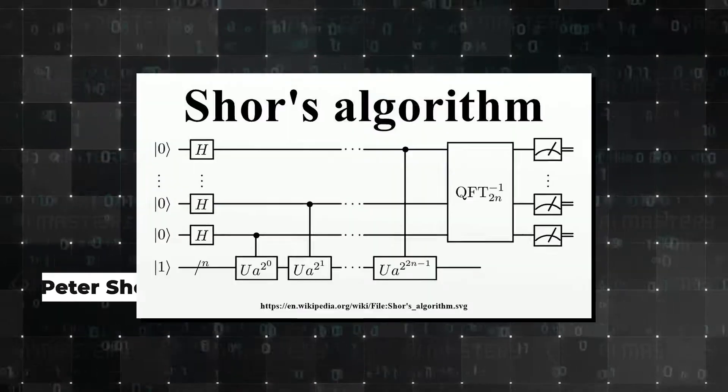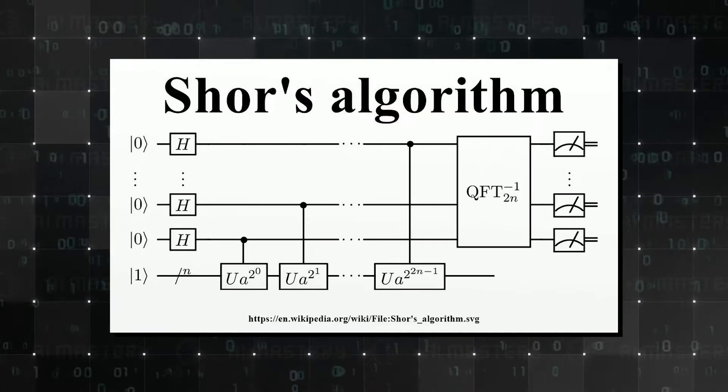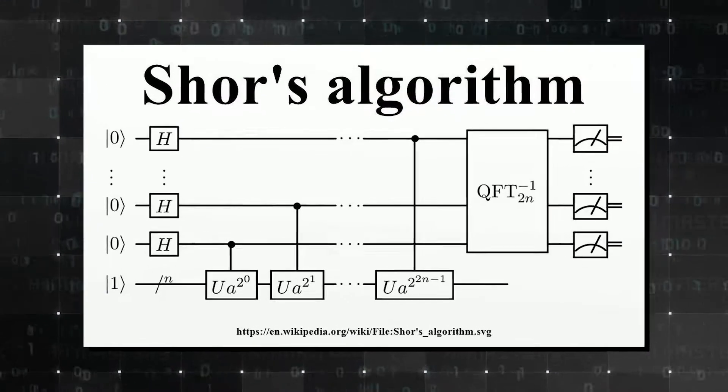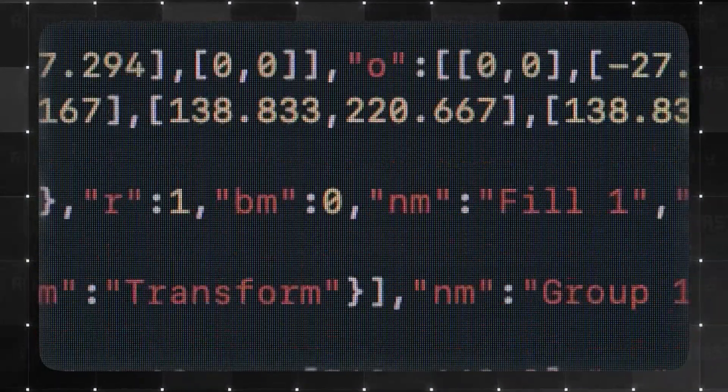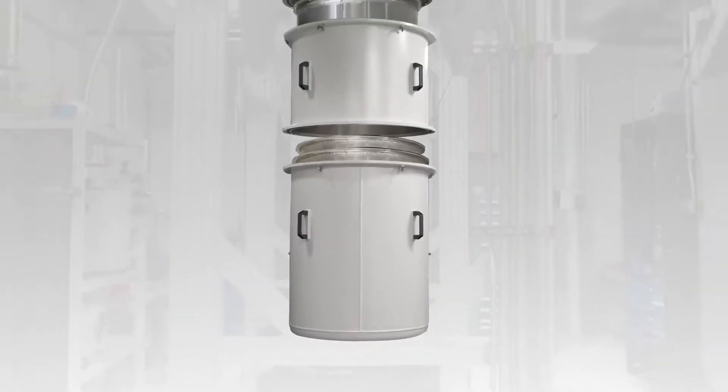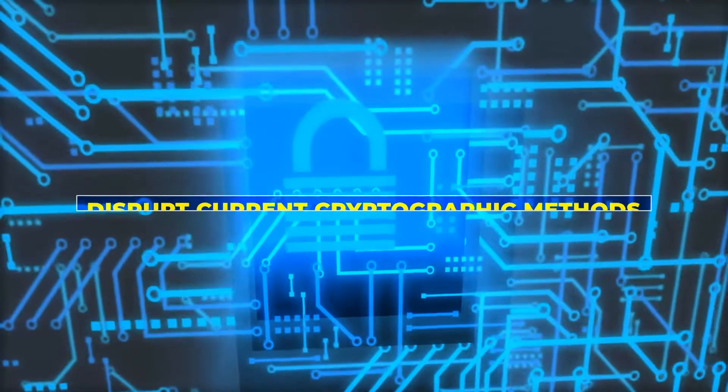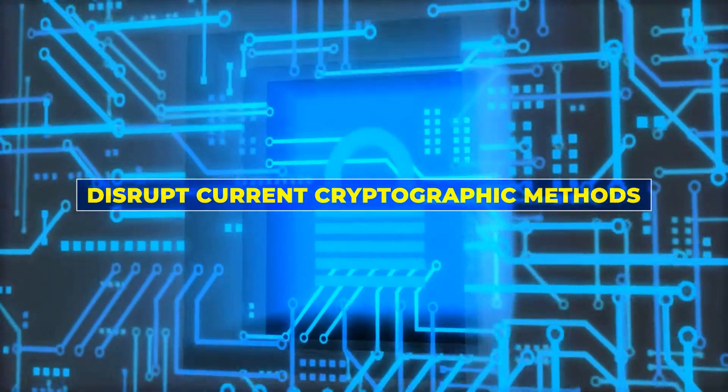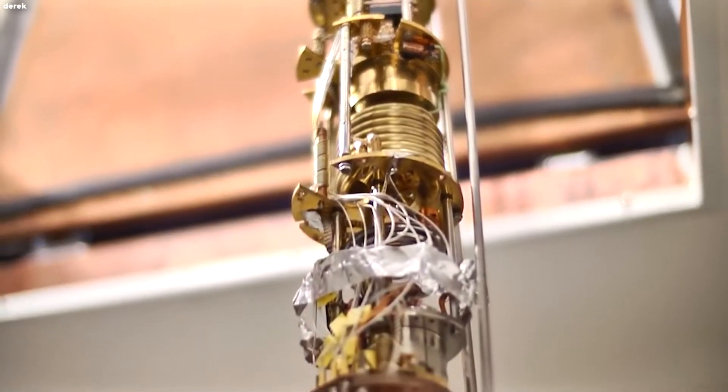In 1994, a mathematician named Peter Shor developed an algorithm that demonstrated the potential of quantum computers to factor large numbers efficiently, a task crucial for encryption and security.